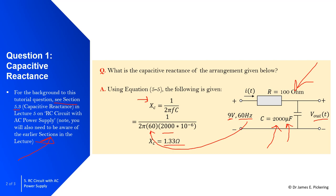Work that out, and the answer is 1.33 ohms. The capacitive reactance of this particular RC circuit with an AC power supply is 1.33 ohms.